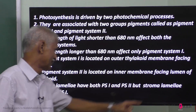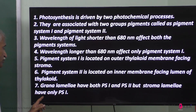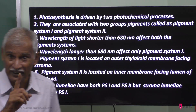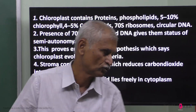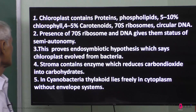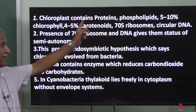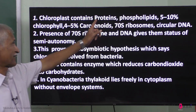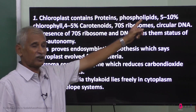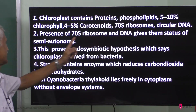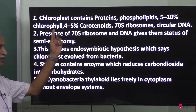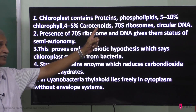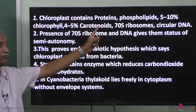Stroma lamellae has only pigment system one - not pigment system two. Chloroplast contains proteins, phospholipids, 5 to 10% of chlorophyll, and 4 to 5% of carotenoid pigments.